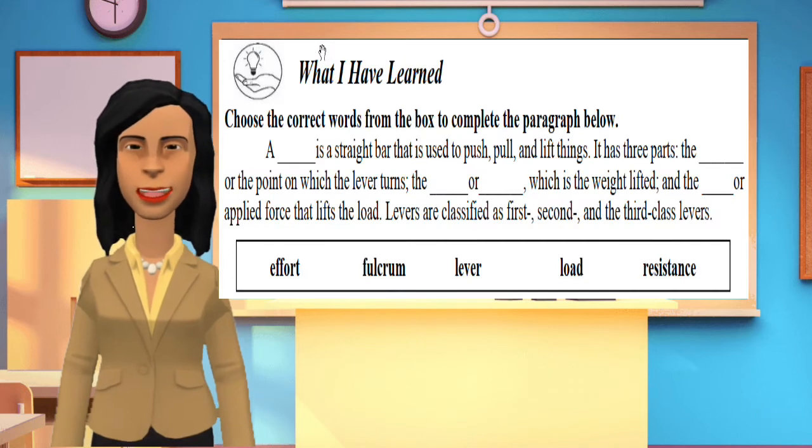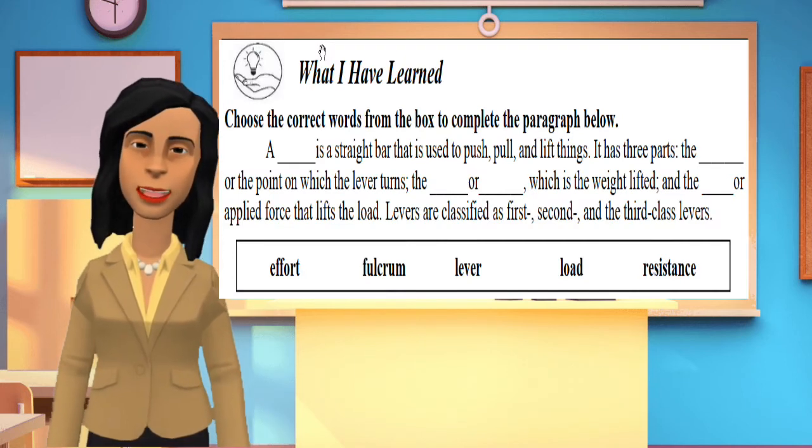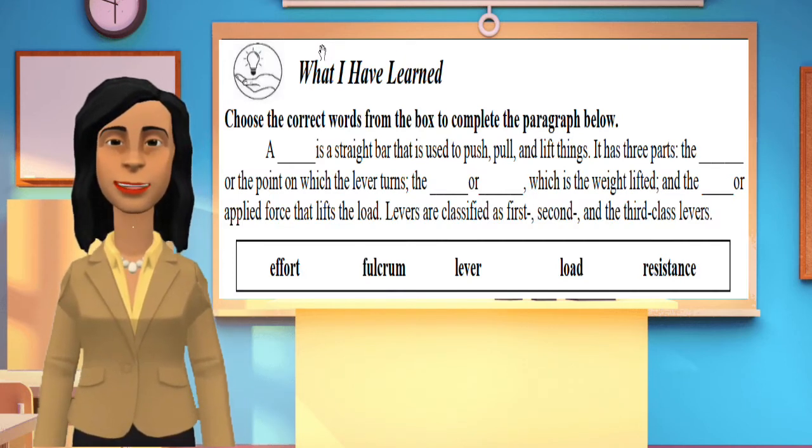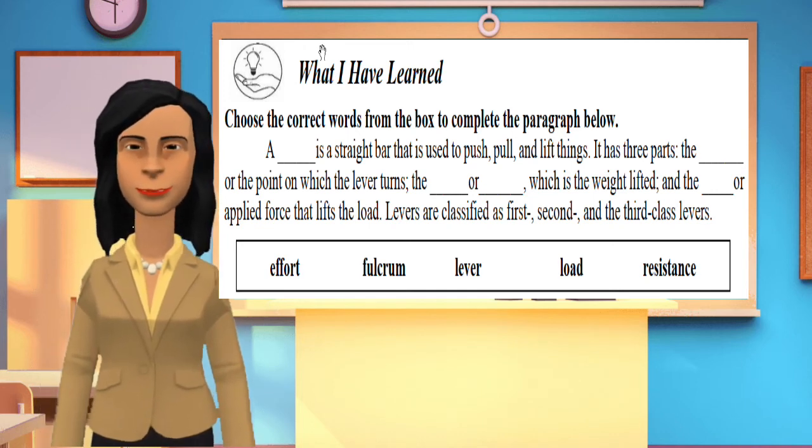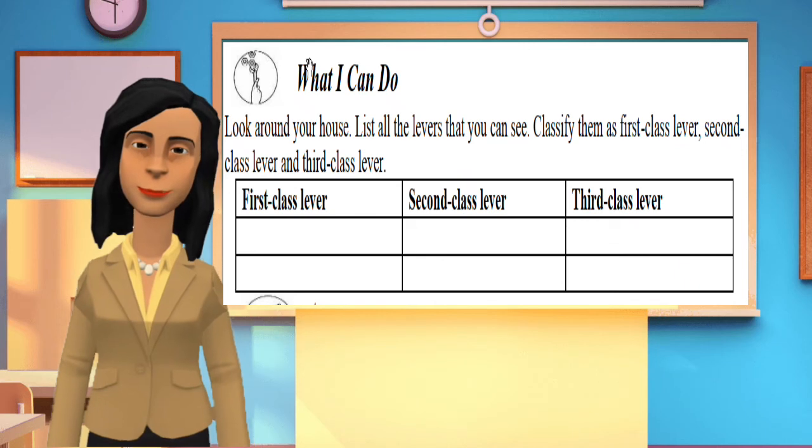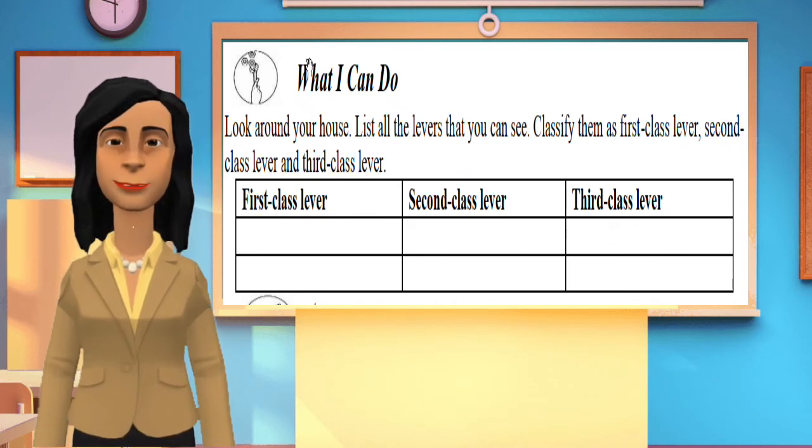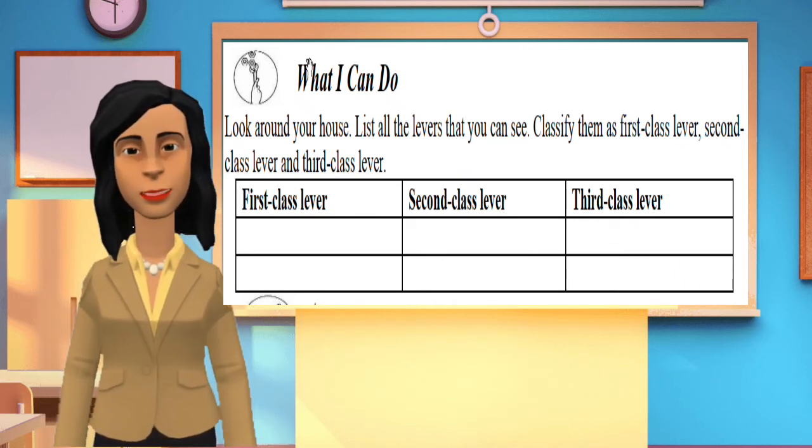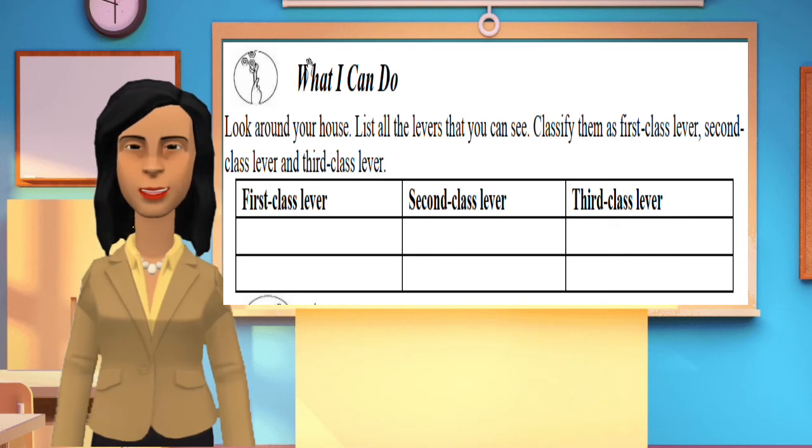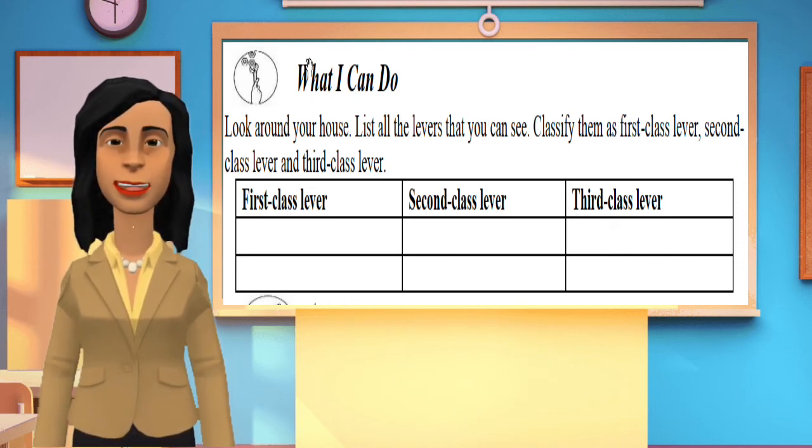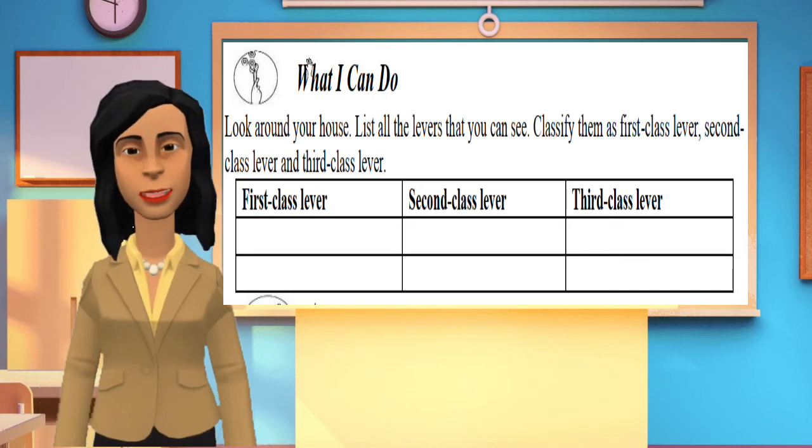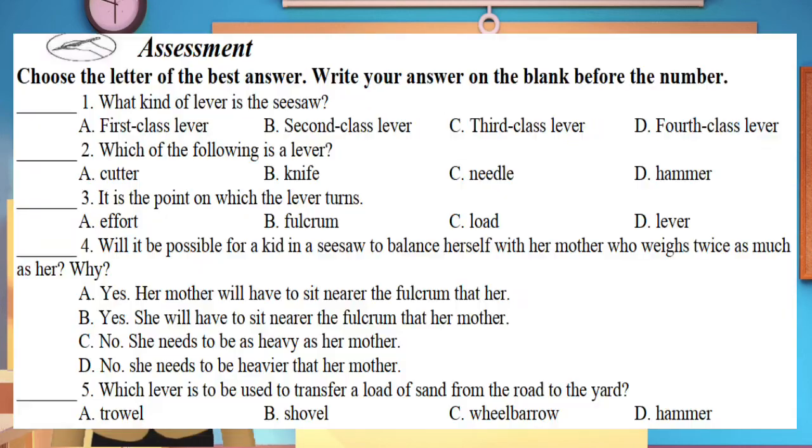What I have learned: choose the correct word from the box to complete the paragraph below. What I can do: look around your house, list all the levers that you can see, classify them as first class lever, second class lever, and third class lever.